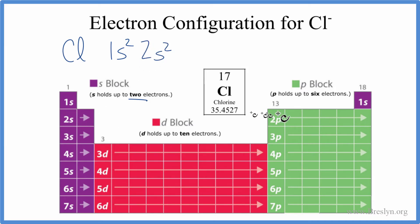And from the s's, we go to the p's. P's can hold up to six. So we'll put 2p, and we'll put six there. We've used six plus two plus two. We've used 10 electrons. So we have seven more.